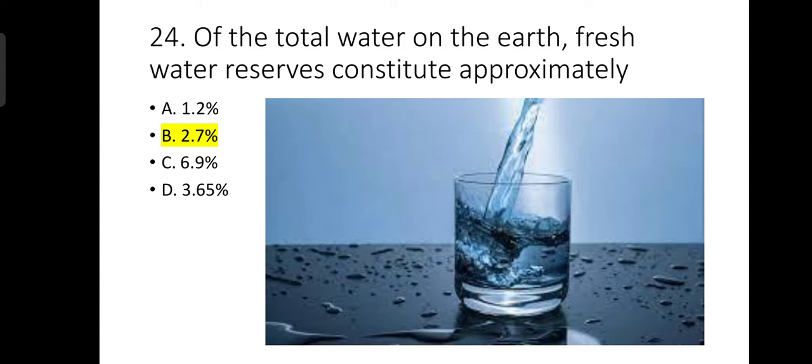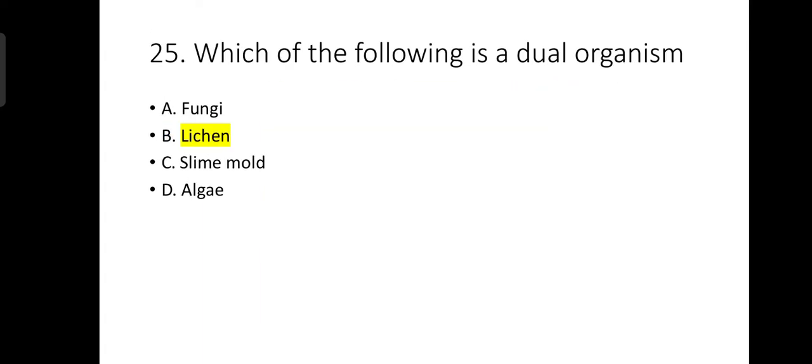Number 24: Of the total water on the earth, fresh water reserves constitute approximately 2.7%. Number 25: Which of the following is a dual organism? Lichen is the dual organism — it is the association between fungi and algae.